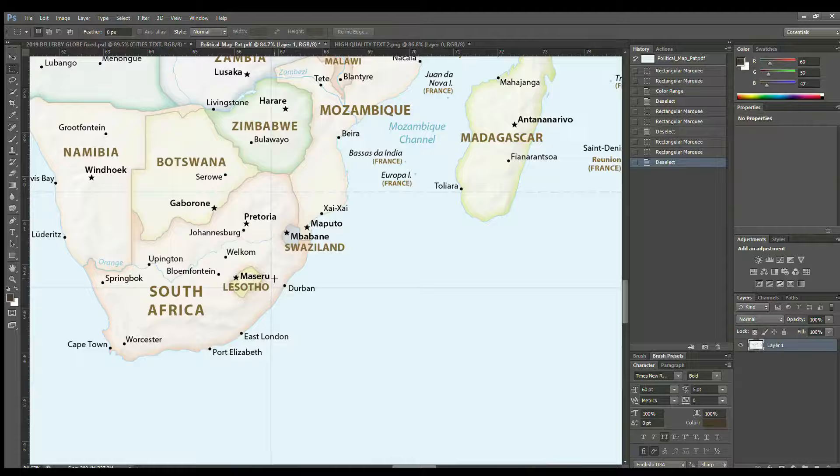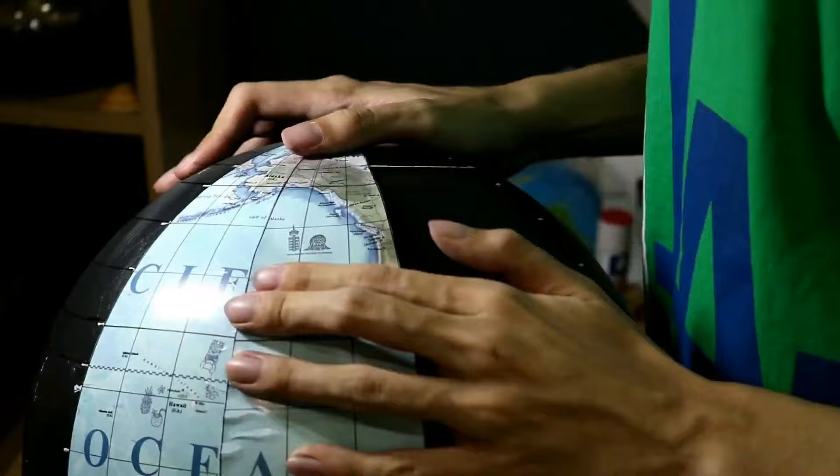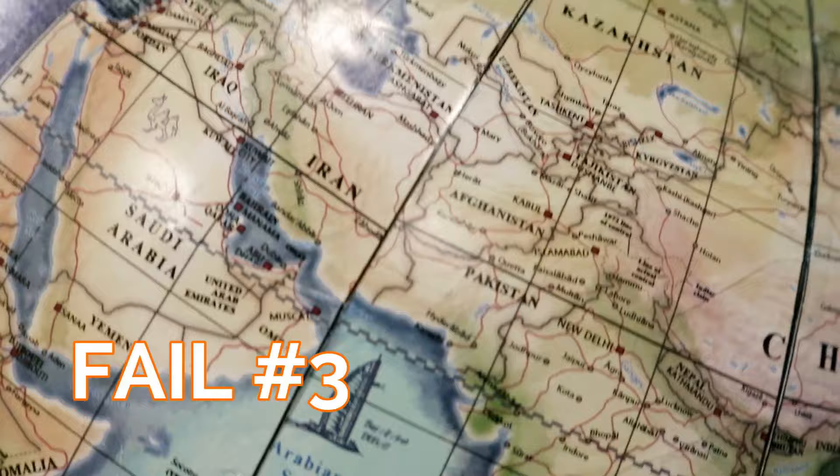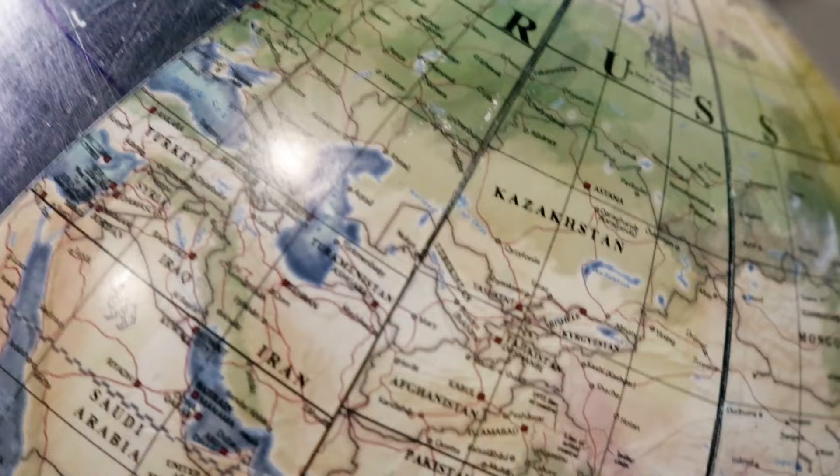And here we go again, cutting out and applying the gores. Yeah, that's attempt number 3. Same problem: the model latitude lines still don't line up.